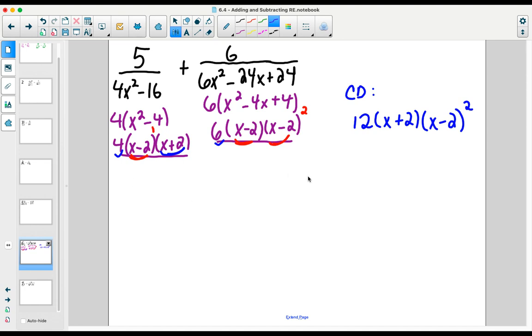So rewriting our two expressions, we're now going to work with this new common denominator of 12(x+2)(x-2)². We're going to do that for both of our rational expressions.